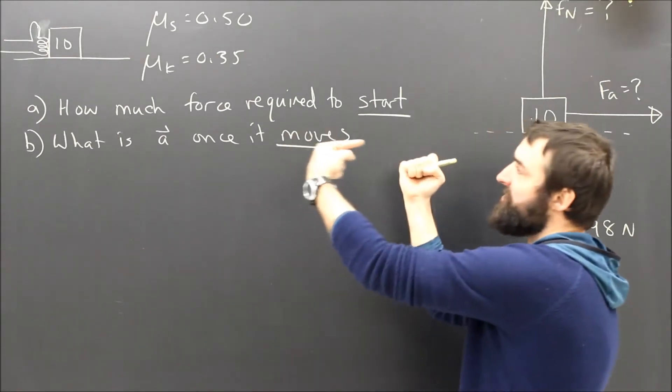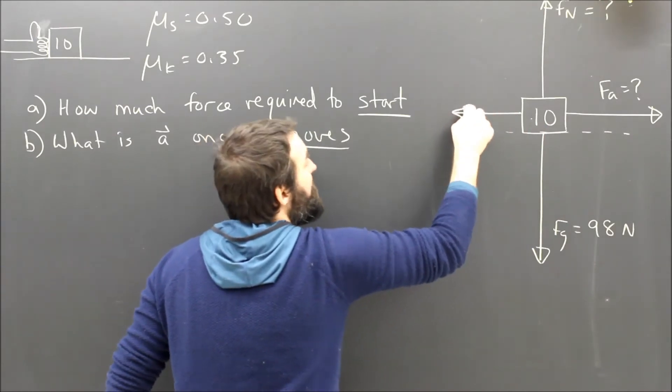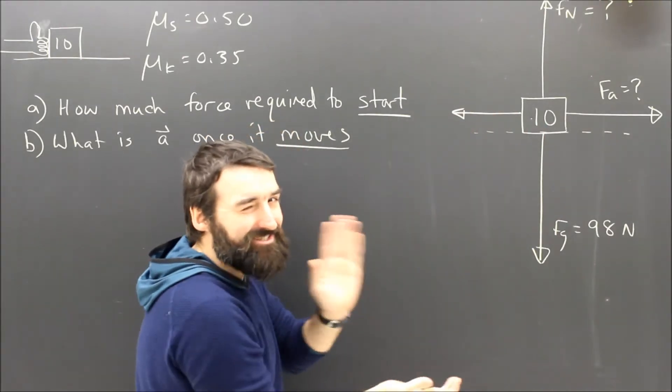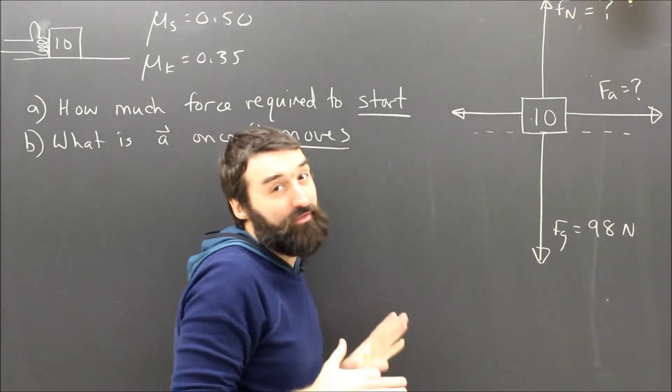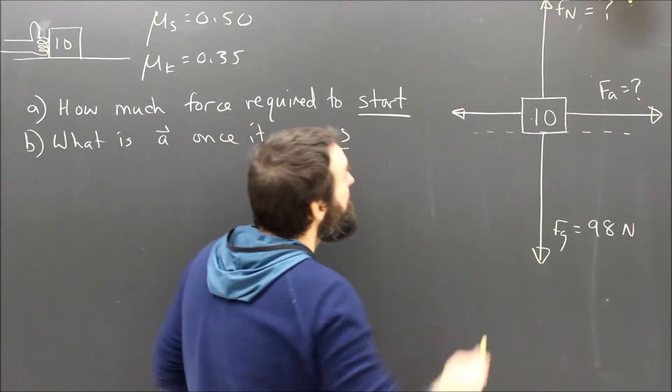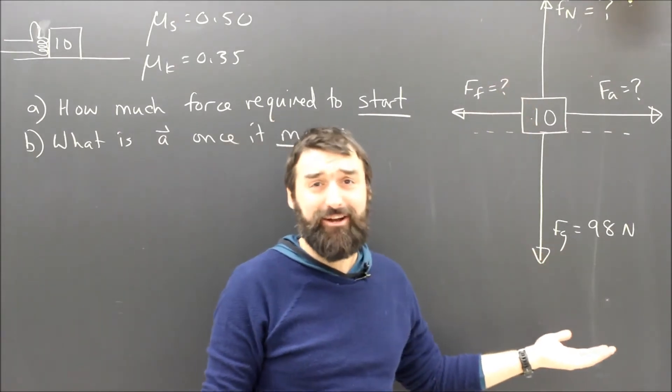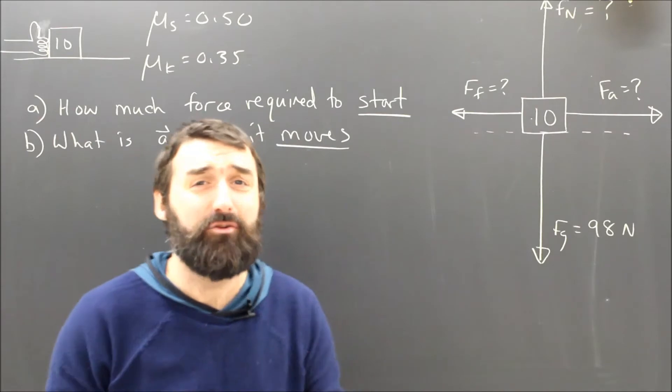When things slide across surfaces there's going to be friction. And the slippage is to the right, so friction is going to fight the slippage by pushing to the left. It's fighting the sliding. It's not necessarily trying to stop the thing from moving, although in this case it is doing that. The force of friction, again, we don't know.